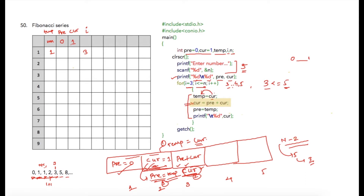In the first iteration, we store the value of current into temp — current is 1, so temp becomes 1. Then we add previous and current: 0 plus 1 equals 1, and store this into current. In the next statement we assign temp to previous, so previous becomes 1. This completes the first iteration — previous is now 1 and current is now 1.